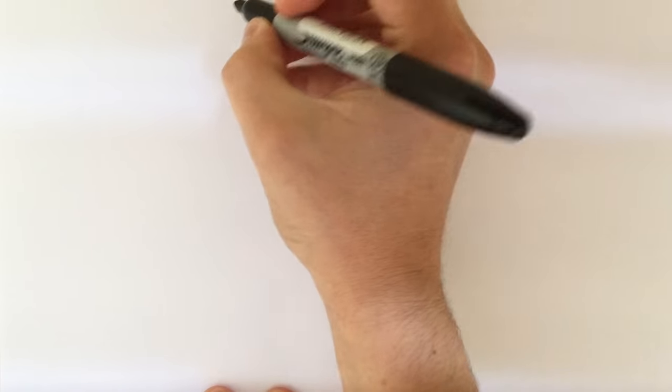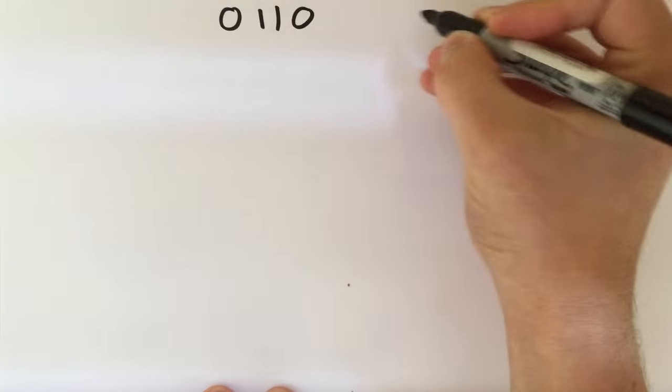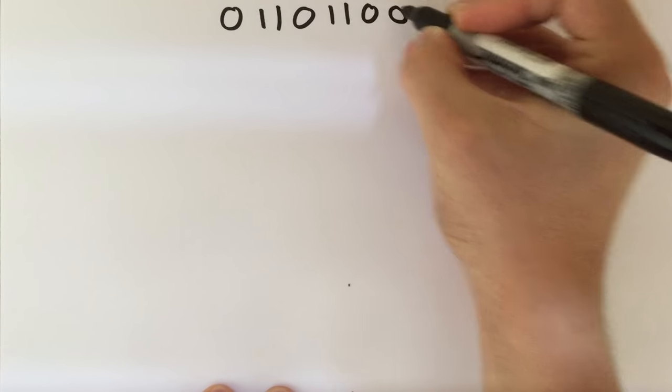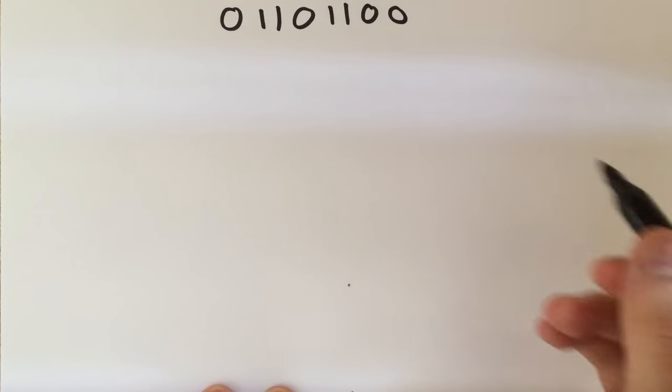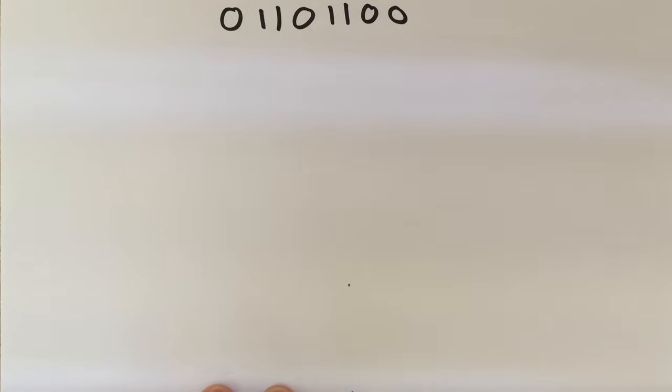In this video we're going to look at converting a binary number such as 01101100. We're going to convert this binary number into a denary number, and I haven't even checked to see what this is going to convert into yet, so let's see if we can figure it out together.